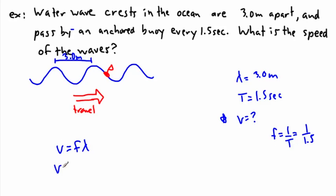If we realize that F, if F is 1 over T, we could actually just replace that with this F here. So instead of F, I write down 1 over T. So 1 over T, all that times lambda. Well, I know all that. I know 1 over T. 1 over T is going to be 1 over 1.5, and then all that times lambda, which is 3.0 meters. This is, of course, going to be seconds.